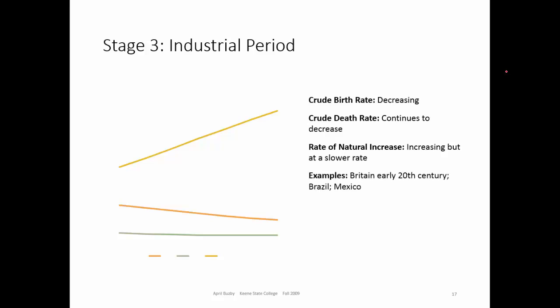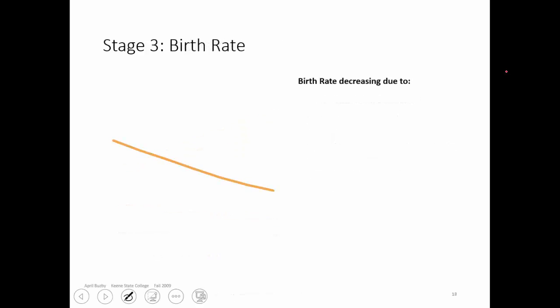The examples written in the earlier 20th century, like we just looked at a little while ago in Brazil and Mexico, where they're fully industrialized — the birth rate decreases to basically a total fertility rate of 2.0, so basically replacement.